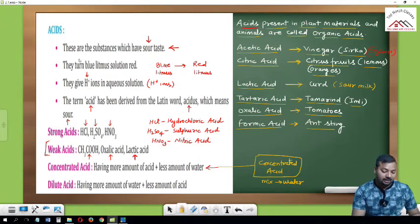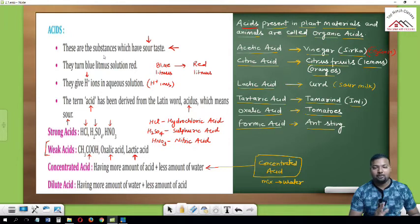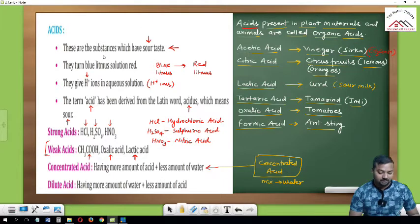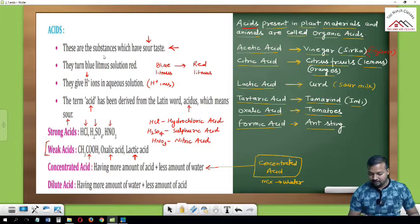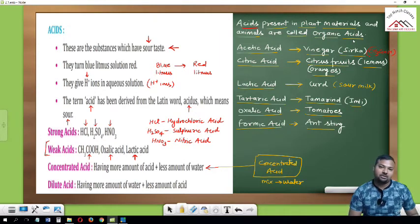To summarize acids: these are the substances which have sour taste; they turn blue litmus paper to red; they give H+ ions in aqueous solution. Some examples of organic acids are acetic acid, citric acid, lactic acid, tartaric acid, oxalic acid, and formic acid.